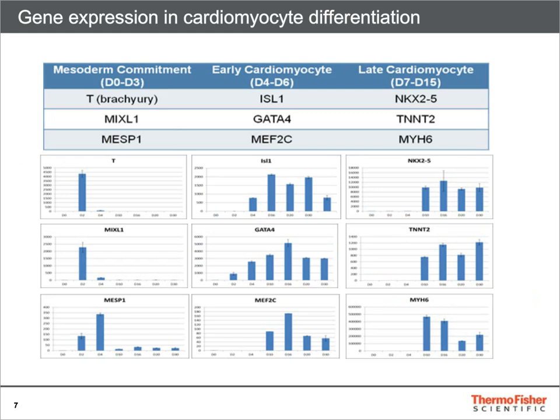Here we show gene expression over time as PSCs are differentiated to cardiomyocytes using the PSC Cardiomyocyte Differentiation Kit. The day, step, and marker are indicated in the top chart. TaqMan qPCR analysis of differentiated ESCs from time of induction day zero throughout day 30 is incorporated in the data. Relative gene expression for each time point is shown, normalized to day zero expression. Data is presented as relative fold change compared to day zero control samples, showing expression of expected markers over time which turn on and off throughout differentiation as expected.